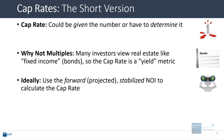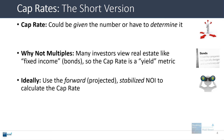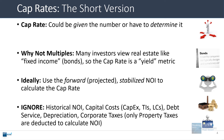You always want to use the forward or projected stabilized NOI to calculate the cap rate. So if the property's occupancy rate is currently 70% but in the long term it's expected to be 85%, you want to use the 85% rate once the property stabilizes. You don't care about the historical NOI or capital costs such as capital expenditures, tenant improvements, or leasing commissions. You ignore debt service, depreciation, corporate level taxes — only property taxes paid to local regions are deducted to calculate NOI.